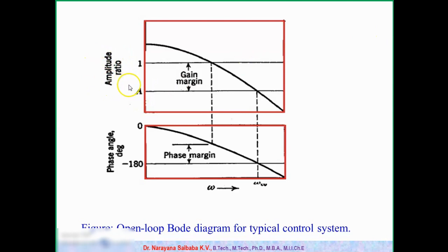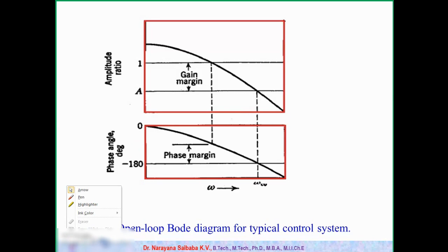The first plot is log AR versus log omega — a log-log plot. The second plot is phi versus log omega — a semi-log plot. For finding gain margin, we first have to find the crossover frequency, which is the frequency where the phase lag is minus 180 degrees. From the bottom plot, at minus 180 degrees, we draw a horizontal line until it touches the curve, and that frequency is called the crossover frequency.